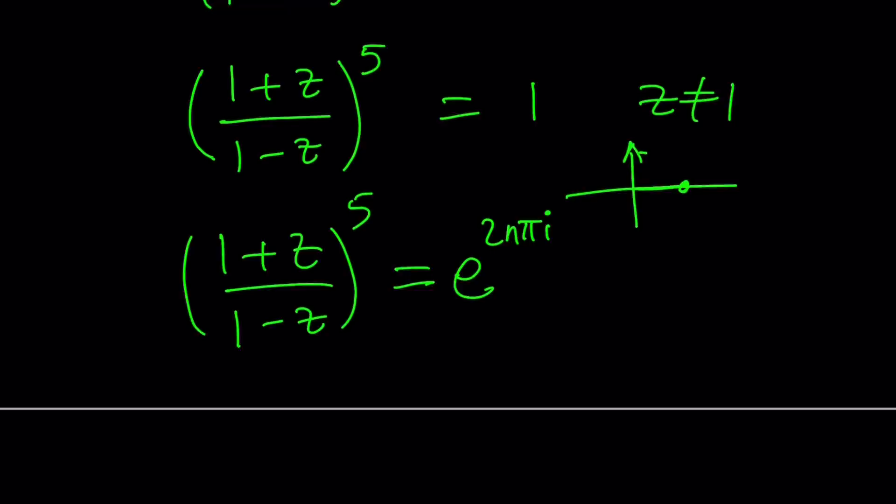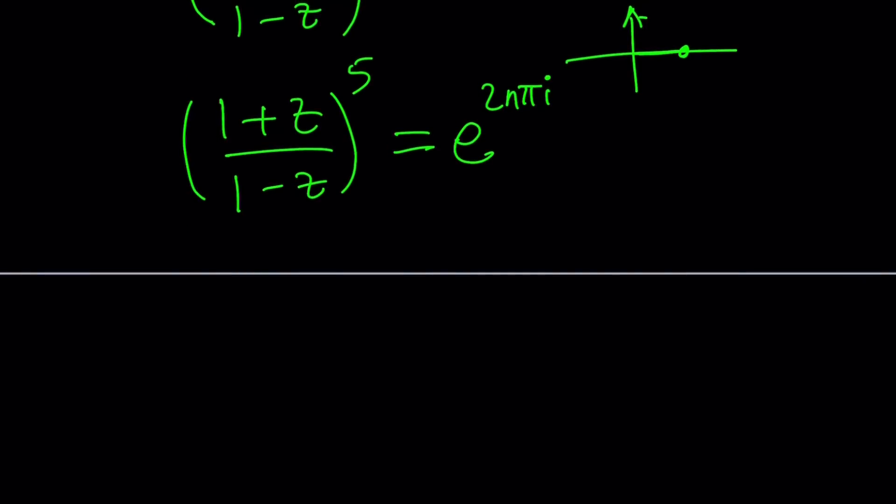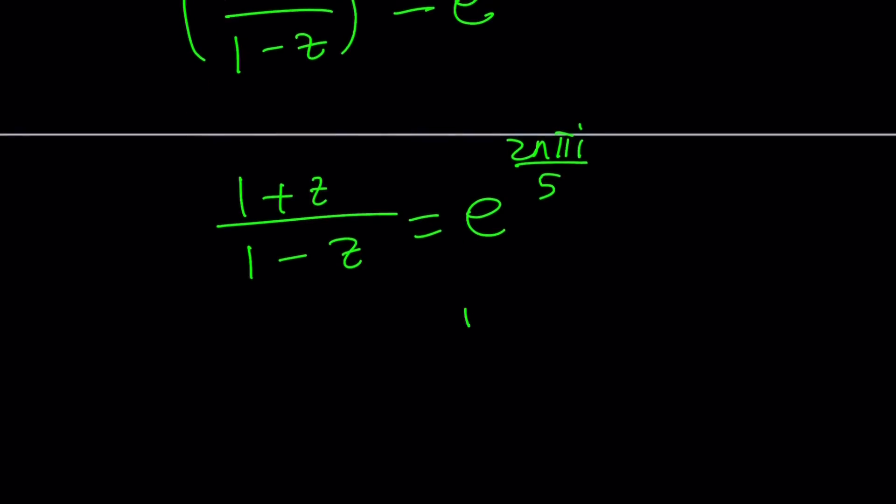Now, what are we going to do? To find the 5th root, we're just going to raise both sides to the power 1 over 5. And that should give us e^(2nπi/5). Now, the values of n are integers, and n can be 0, 1, 2, 3, and 4, giving us 5 complex 5th roots of this number. And of course, from here, we should be able to solve for z.